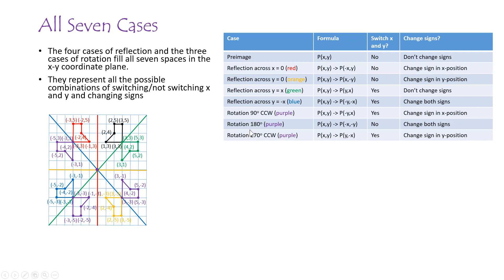Looking at all the cases we've learned — one is just the pre-image itself — four of them you switch the X and Y and four you don't. Then you either don't change the signs, change the sign of the first position, change the sign of the second position, or change both signs. It covers all cases, and I recommend you memorize all these formulas for your class — that will put you in great shape for this section.